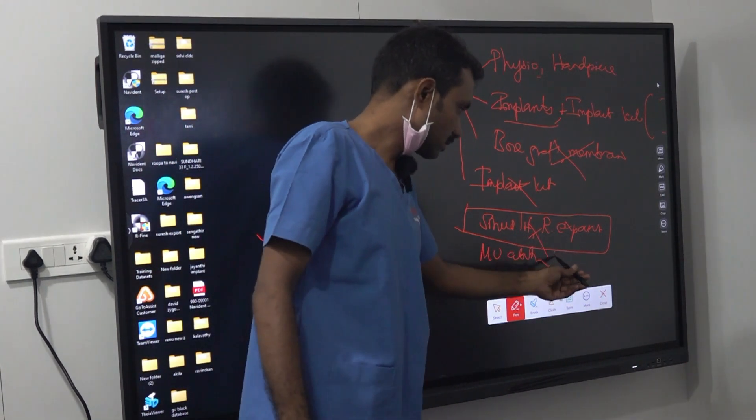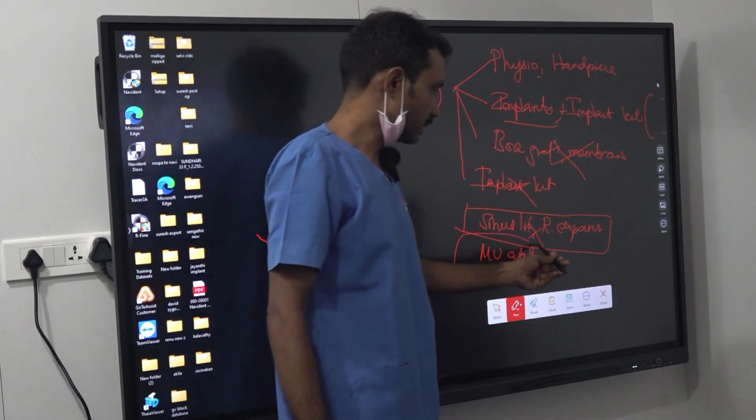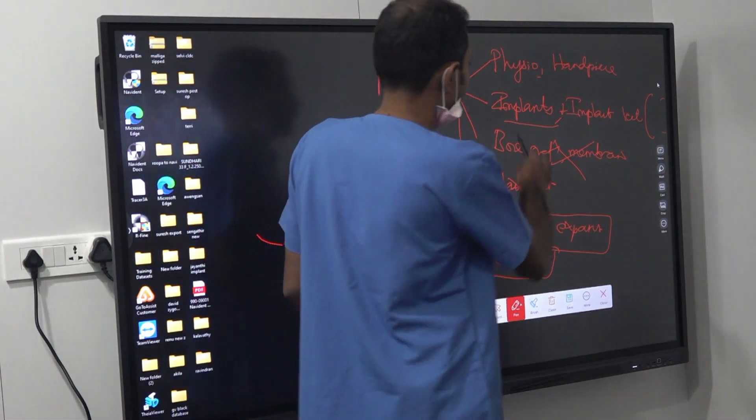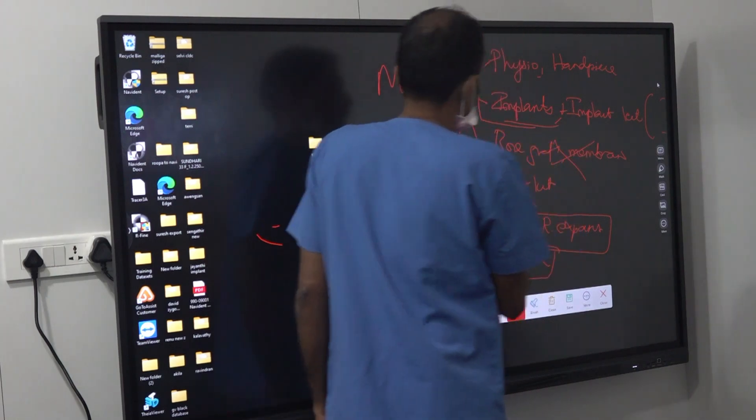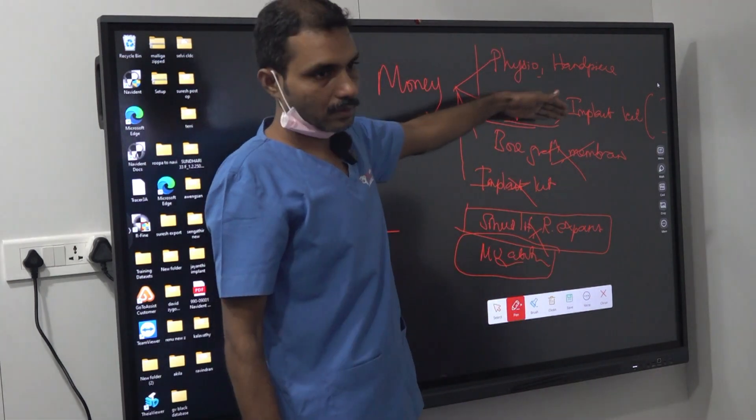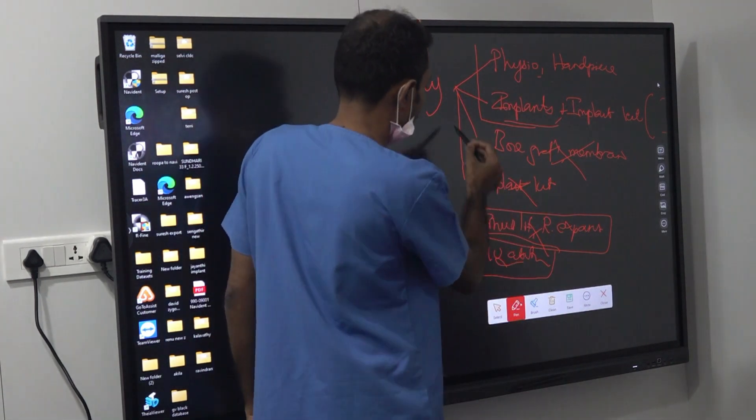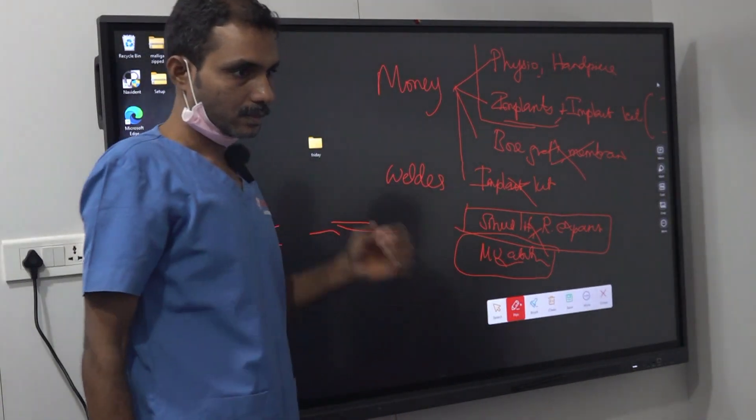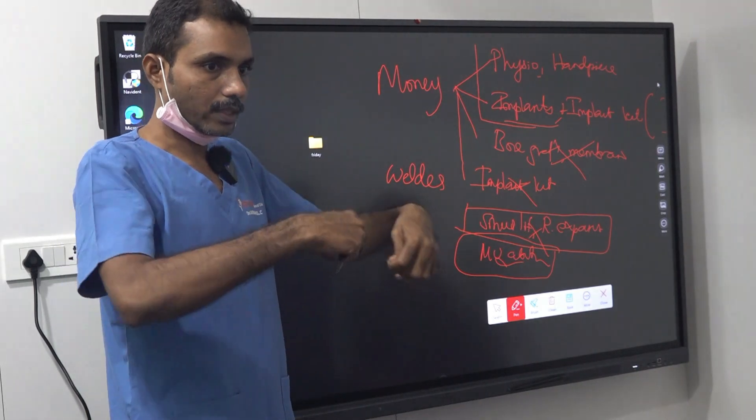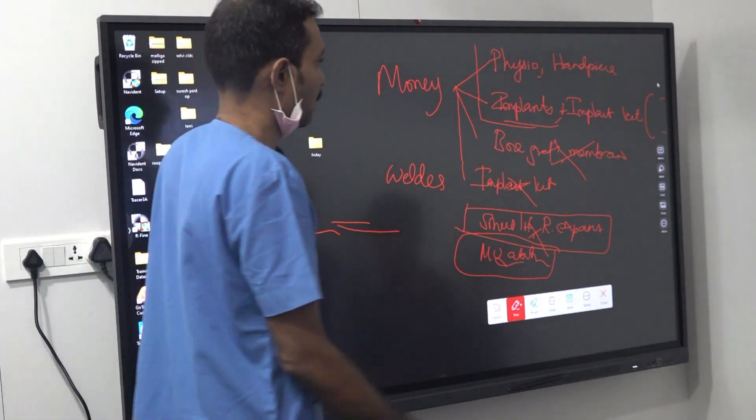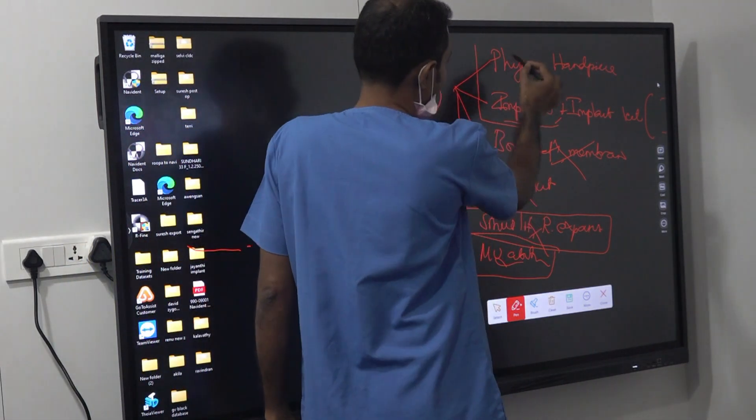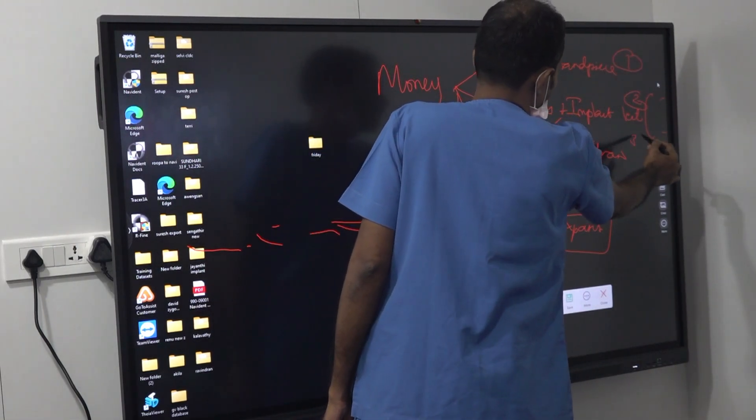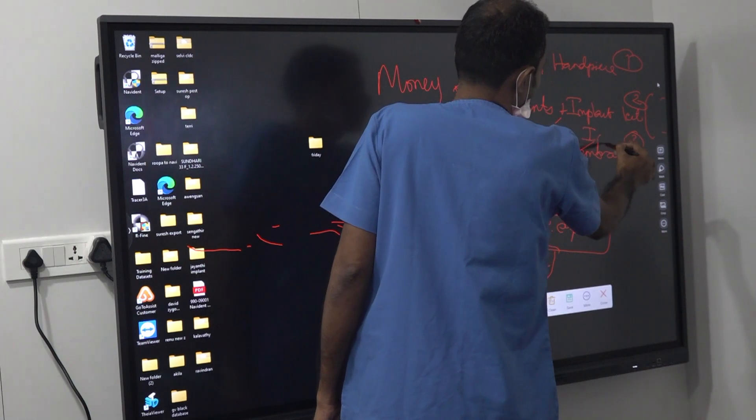Since we are practicing only single piece, multi-unit abutments are also not necessary. So the basic thing if you want to start single piece now is this. And one more additional thing is the welder - intraoral welding to unite all the implants. Boiling down to only three things: one is physio with antics, implants kit plus implants, third one is the intraoral welder.